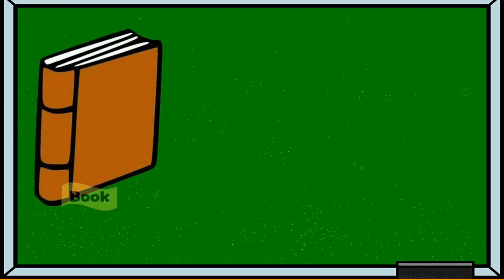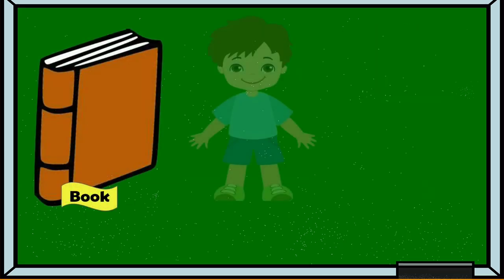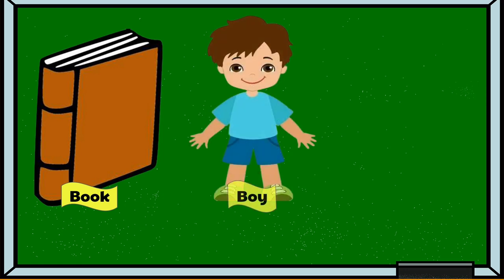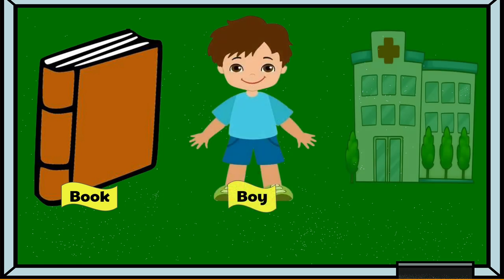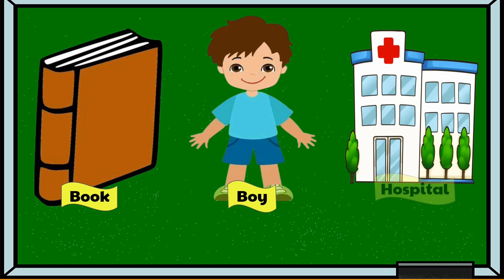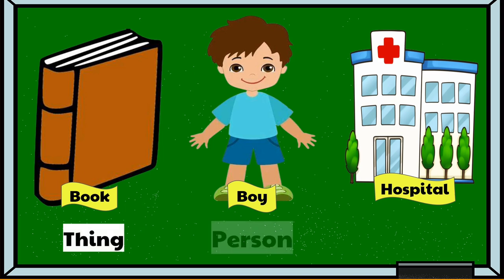Book. Boy. And hospital. The book is the example for thing. A boy is an example for person. And the hospital is the example for place.